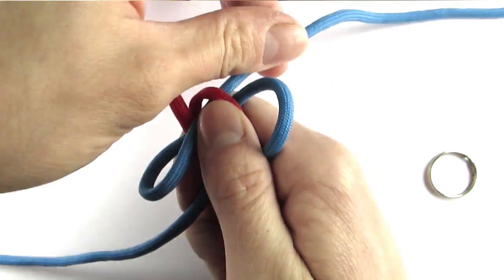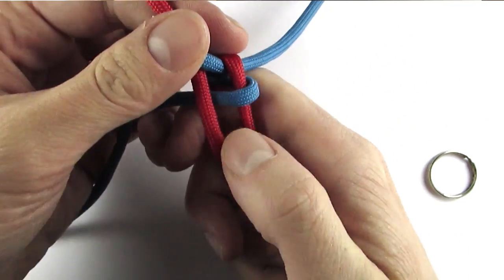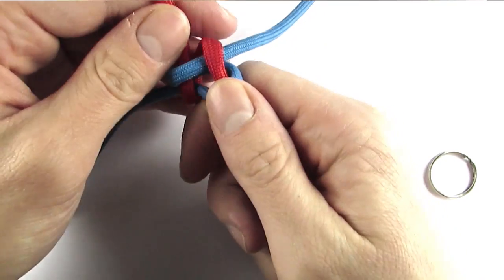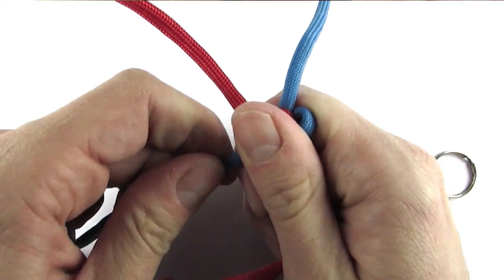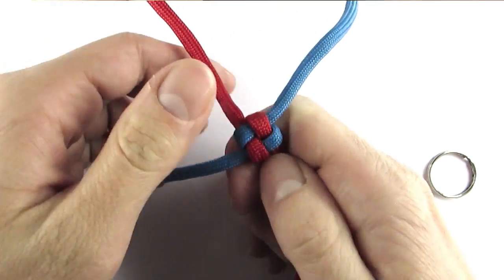We will now tighten the knot by pulling on each of the cords. And this gives us the first box knot.